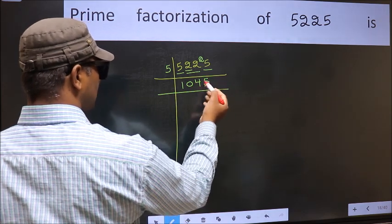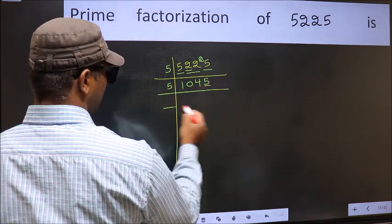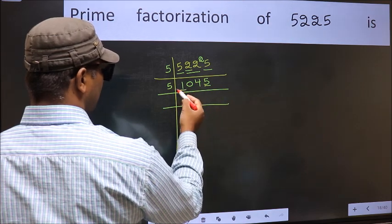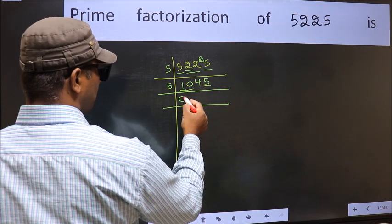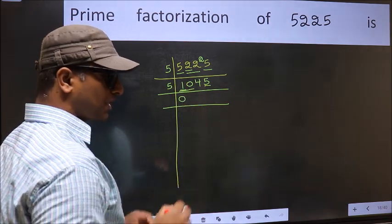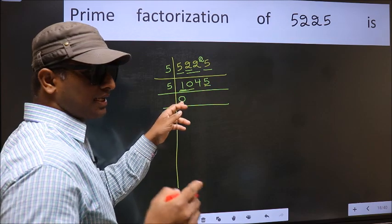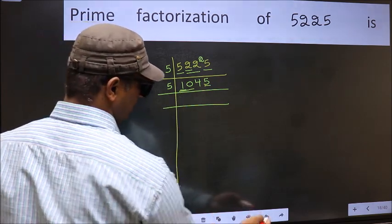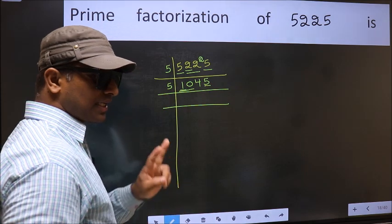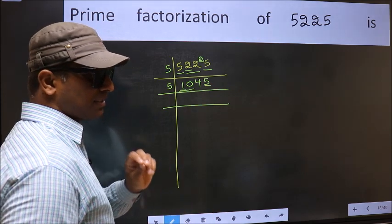Now the last digit is 5, so take 5. First number 1 is smaller than 5, so take 2 numbers: 10. Whenever you take 2 numbers, compulsory put 0. But 0 at the starting does not count, so no need to write 0 at the start. Anywhere else you are taking 2 numbers, compulsory put 0.